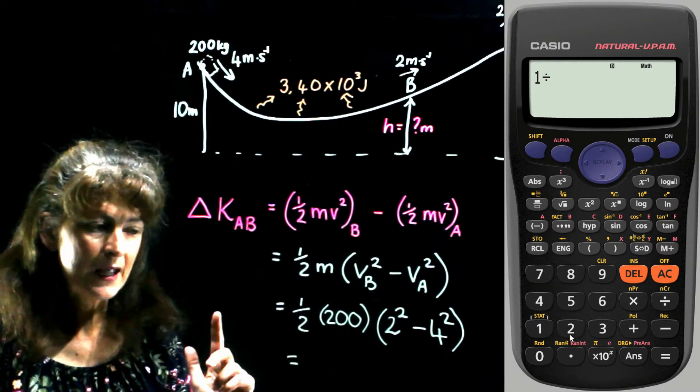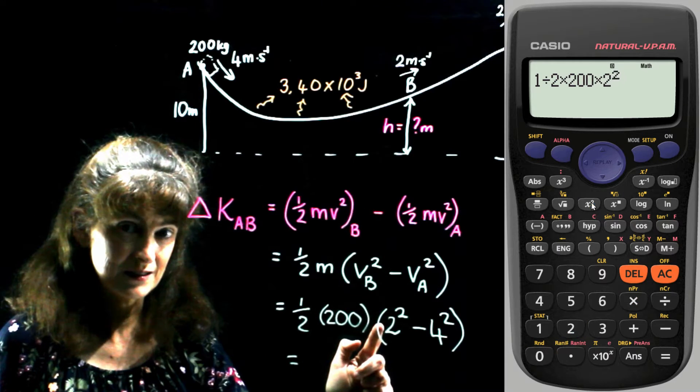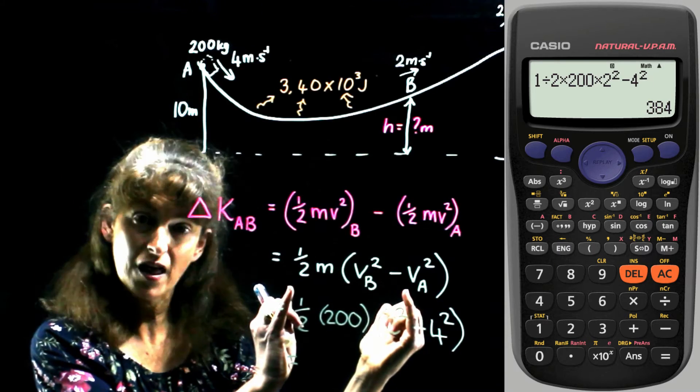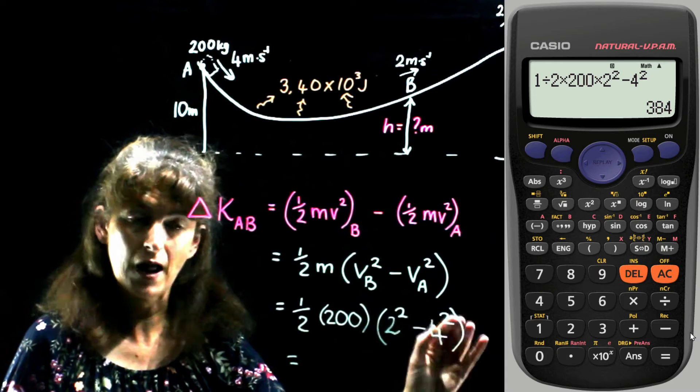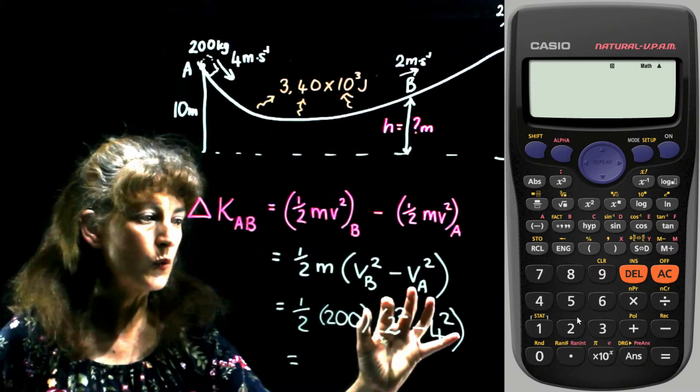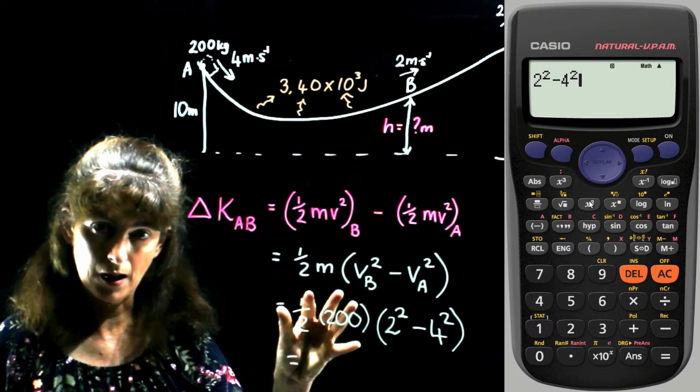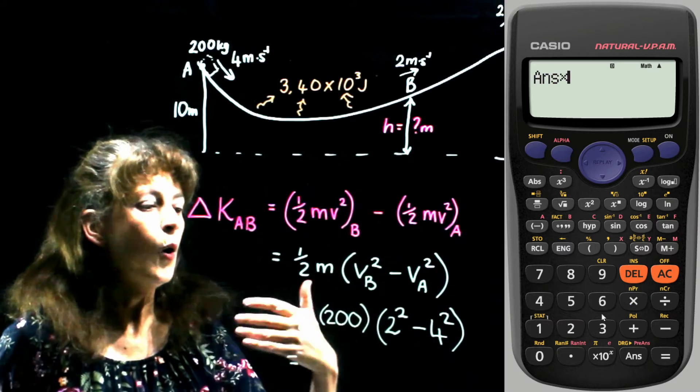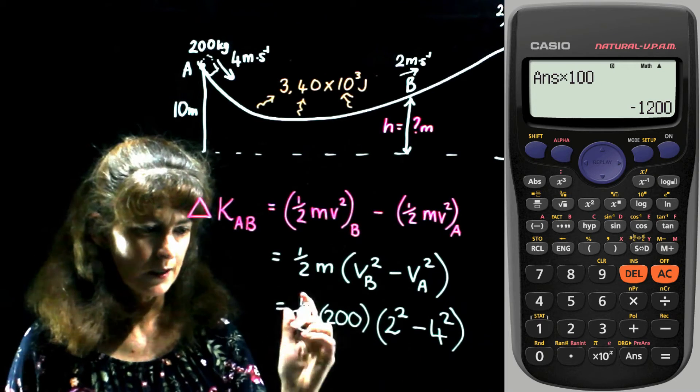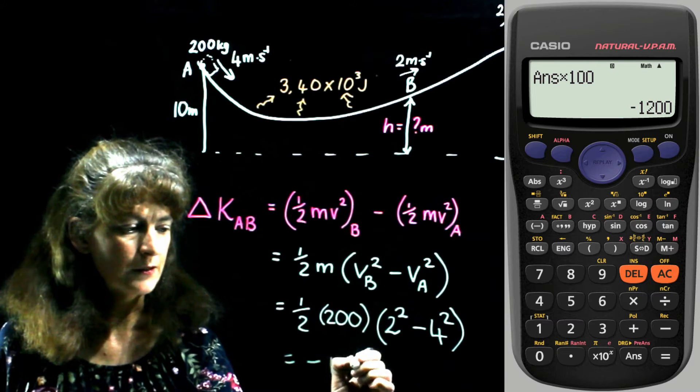But if you're not careful and you just put it in your calculator, a half 200 times 2 squared minus 4 squared, it will do this part first. And then from that, subtract 4 squared, which is not the same thing. So either we must do this part ourselves first, and then multiply it by 100, or we must do it exactly as it is on the calculator.